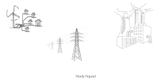Electricity is another example of a scarce resource. Eskom, the company that provides electricity, doesn't have enough to supply everyone in the country all the time. To manage this, Eskom uses load shedding, which means they turn off the power in different areas at different times. This helps satisfy the country's need for electricity.